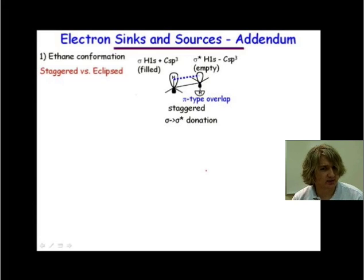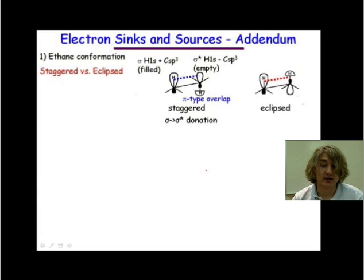Now to see, just to look at the stabilization, we need to look at the eclipsed form to see whether there are any of those interactions in that eclipsed form. Looking at it here, the sigma star orbital is flipped around 180 degrees, and we don't have adequate overlap between our orbitals.